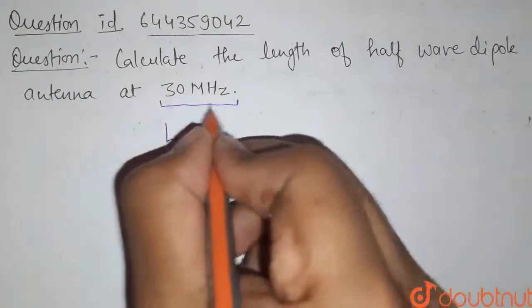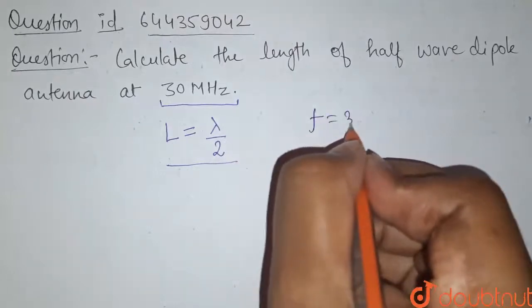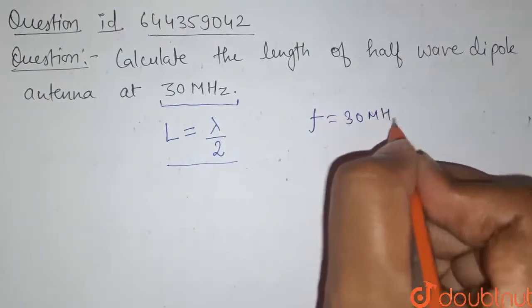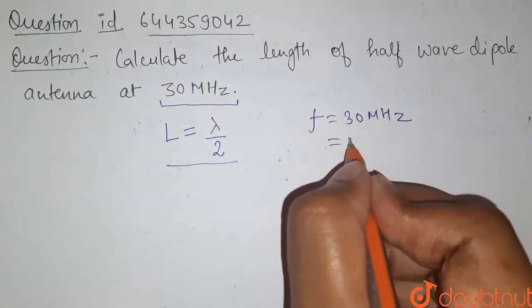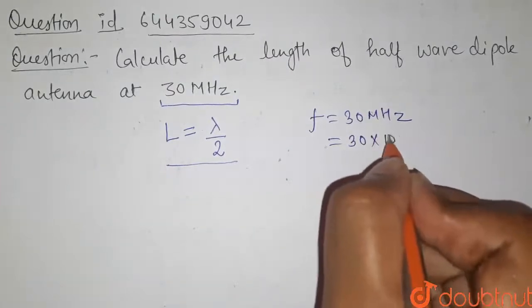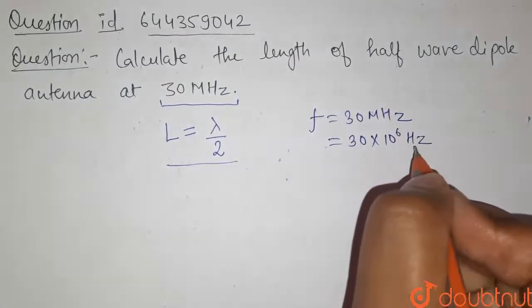In the question, we're given that frequency equals 30 megahertz. Let's convert it into SI units. So it will be 30 times 10 to the power 6 hertz.